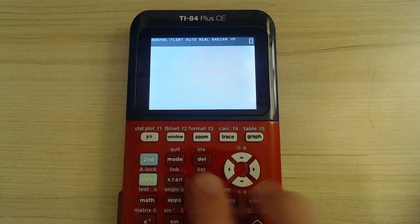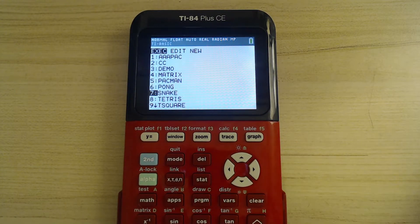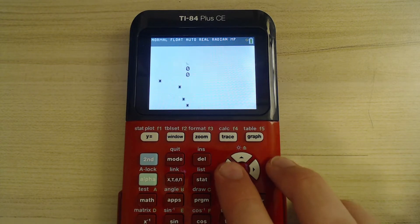So now we're going to exit by pressing second mode. We're going to go to snake and press enter, enter. And the snake is a bit slower.